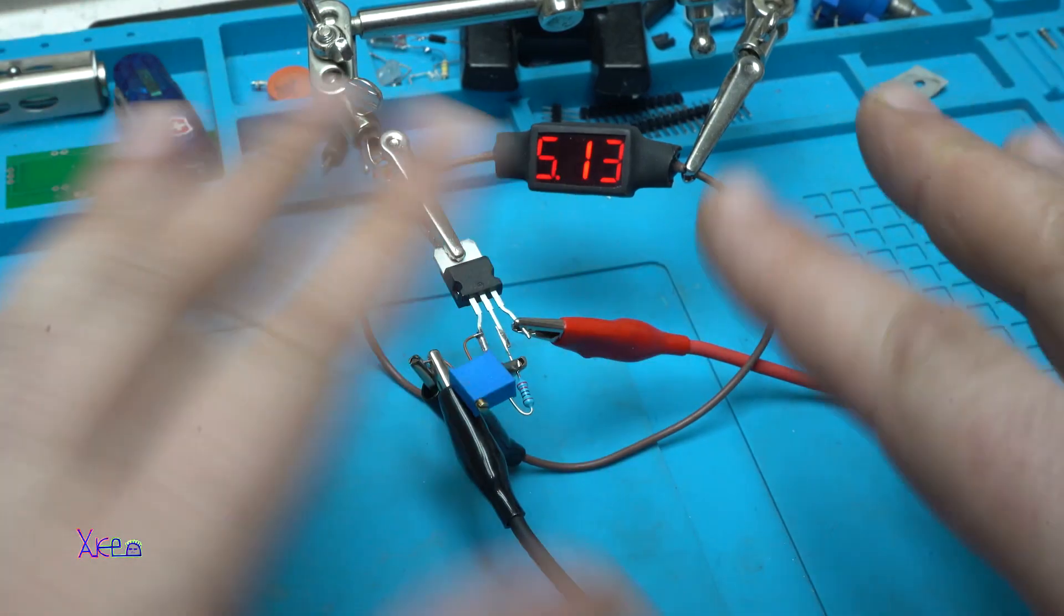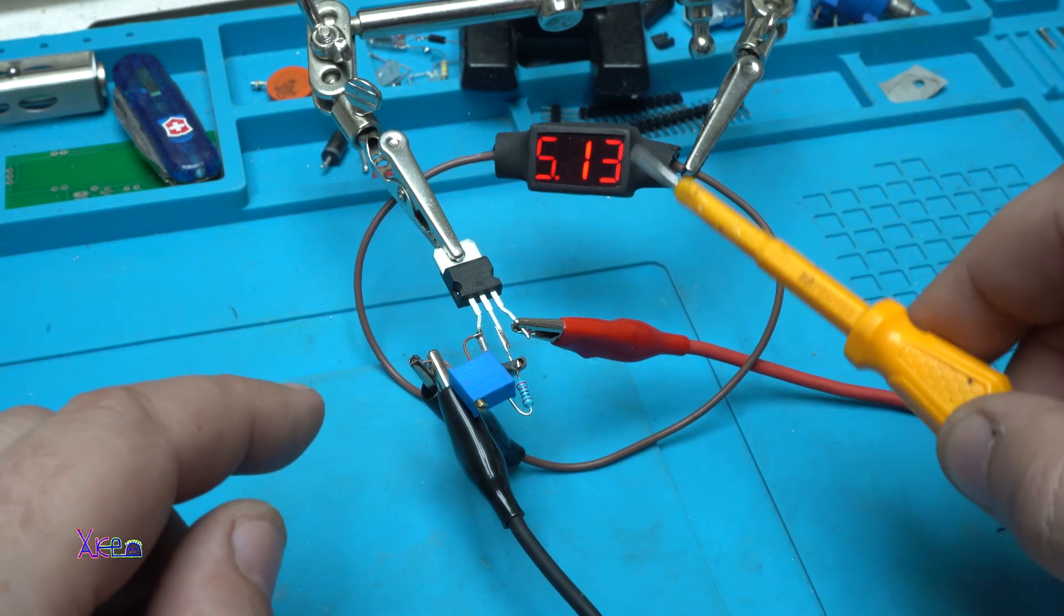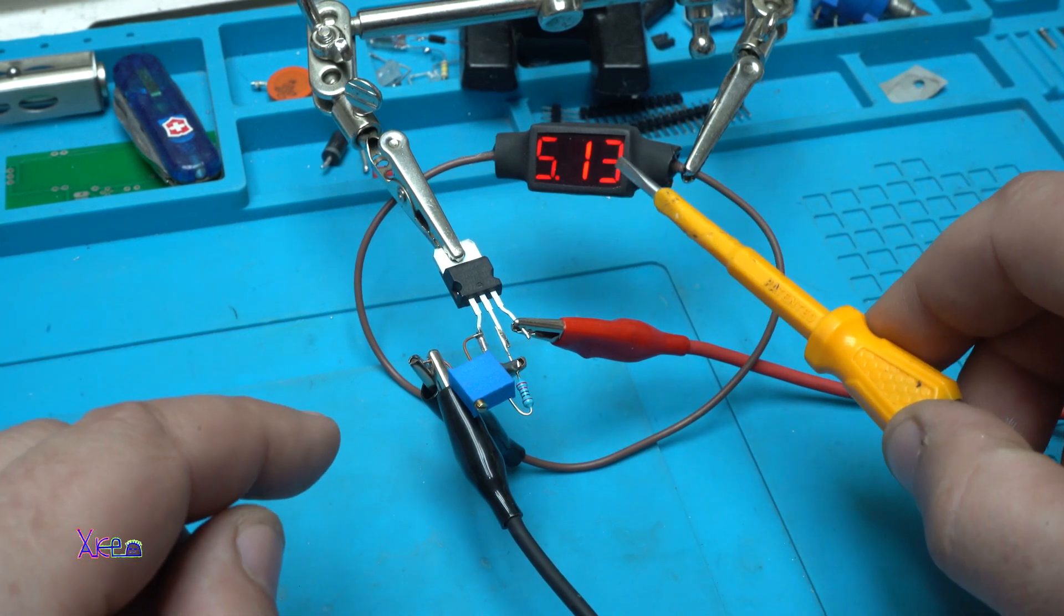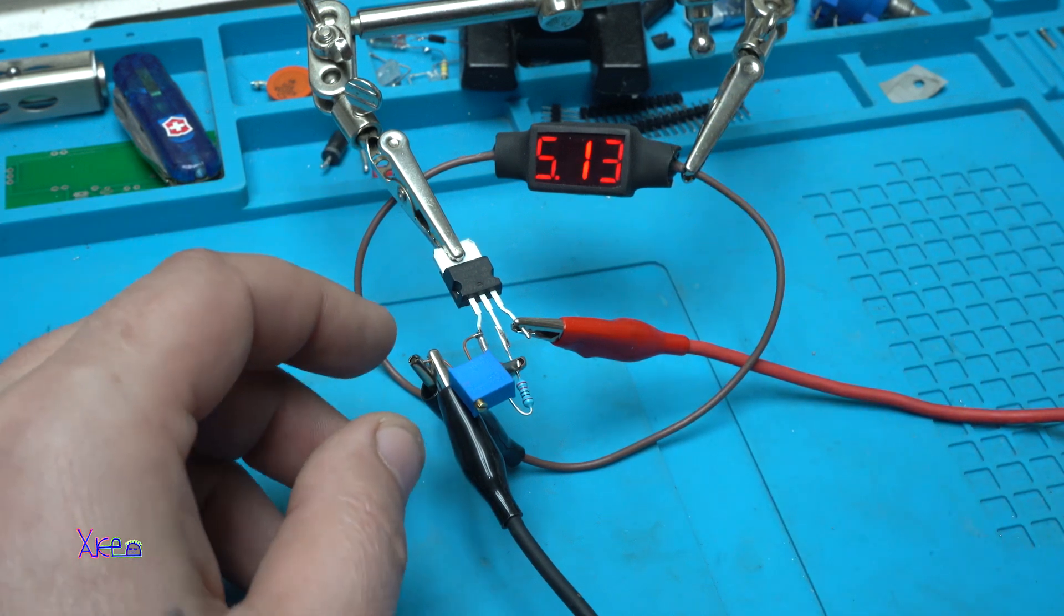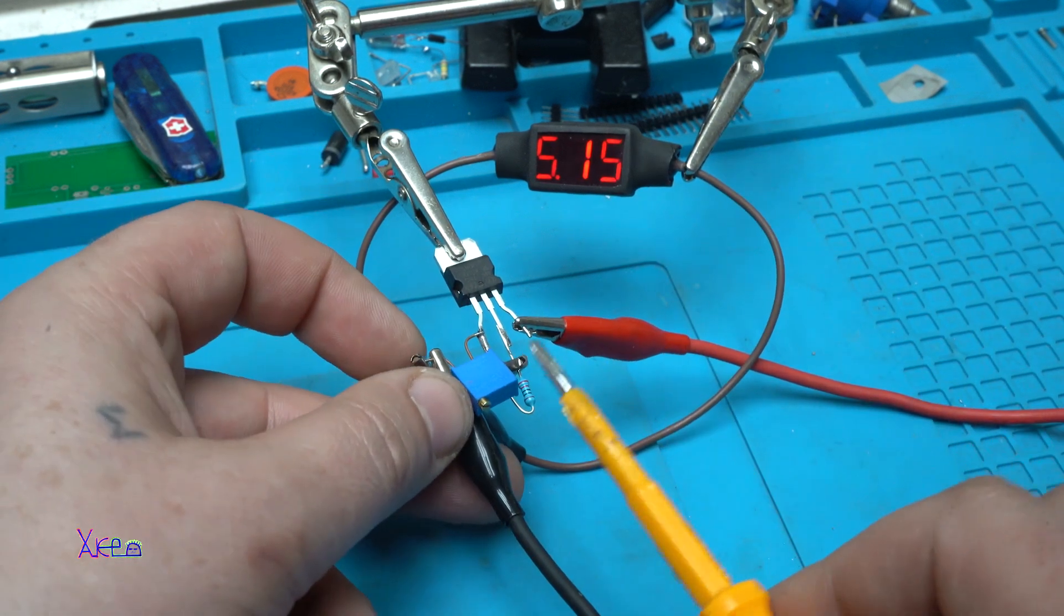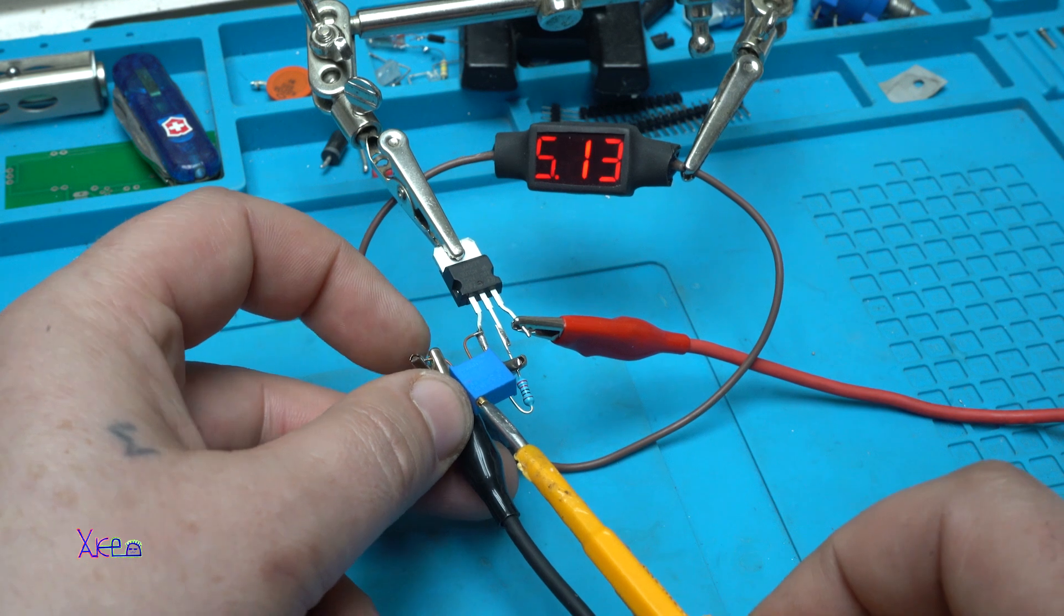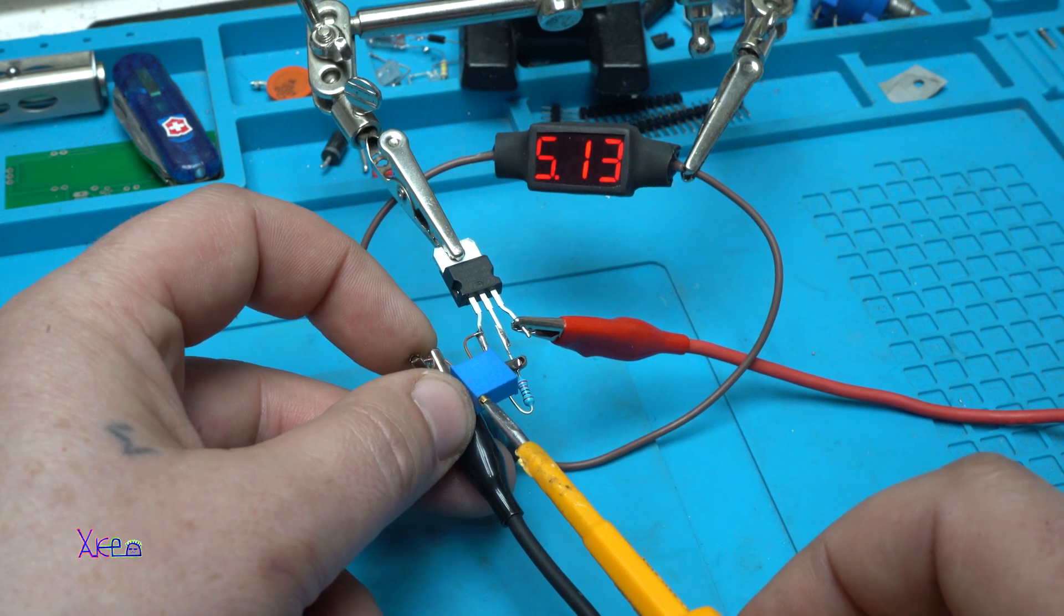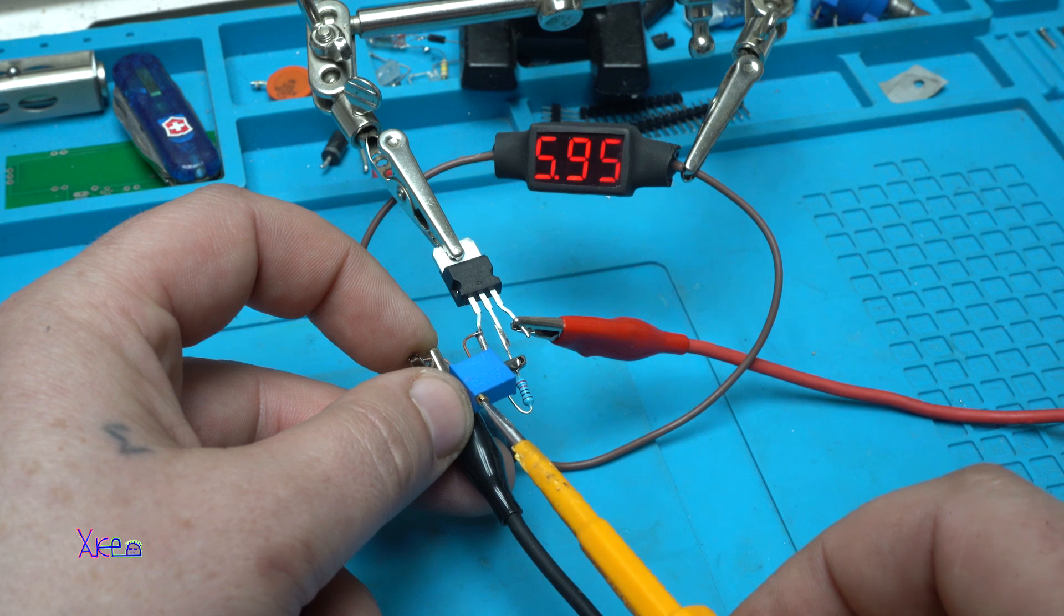Okay, everything is good now. I have added the voltmeter to measure the output voltage. Now when you adjust this trimmer potentiometer, the voltage will change.